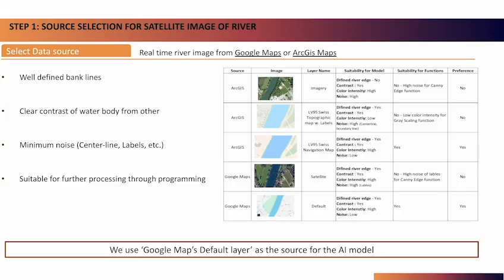For developing the solution, I divided the process into three steps. Step one was source selection, where we explored various layers of GIS maps and Google Maps to find images with well-defined bank lines, clear contrast and minimum noise. We finally settled on the default layer of Google Maps as our source.